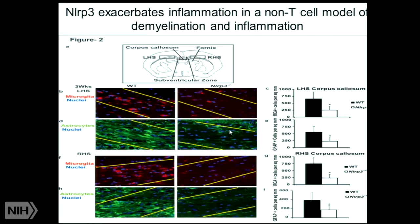We also looked at an inflammatory disease that has nothing to do with the T-cell system, but does result in microglia activation. Microglia are all the red cells shown here, and in the knockout, there's very little inflammatory response in this model system. We looked at both the left and right hemispheres, and expectedly there's no difference between the two. So this shows NLRP3 has a very important role in general inflammation, including lungs, CNS, skin, and bone.